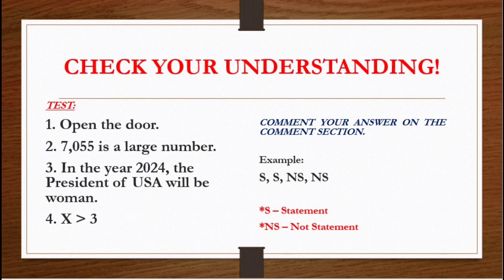Number 1: 'Open the door.' Number 2: '7,055 is a large number.' Number 3: 'In the year 2024, the president of the USA will be a woman.' And number 4: 'x is greater than 3.' We don't know yet if these are correct or wrong. Comment your answers on the comment section for all those who want to answer and know their score.